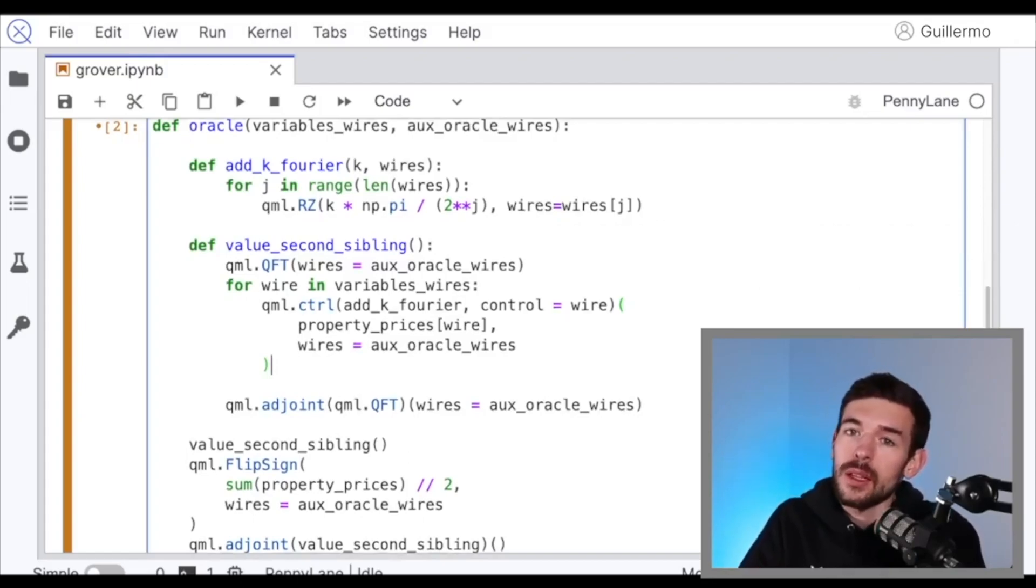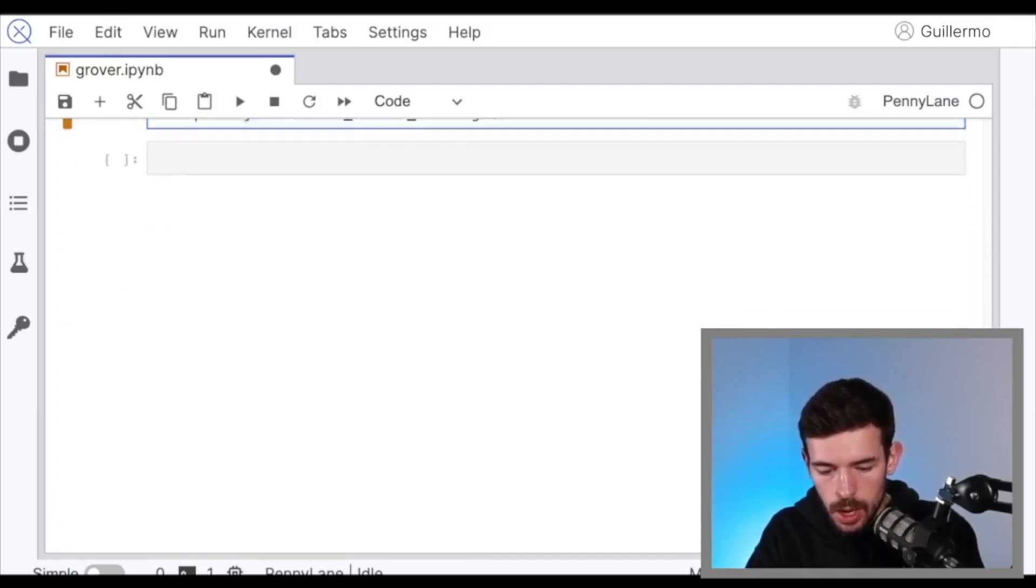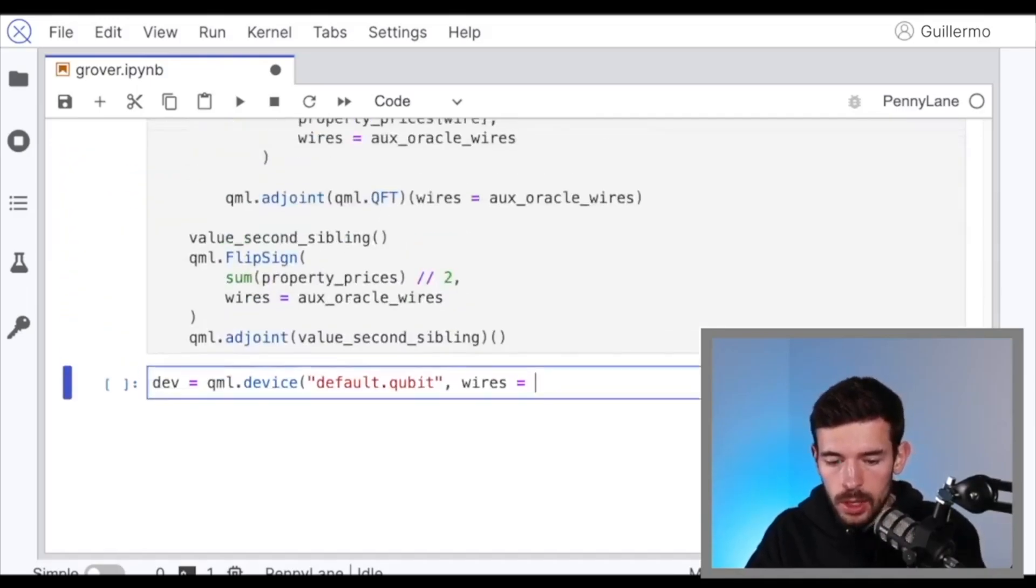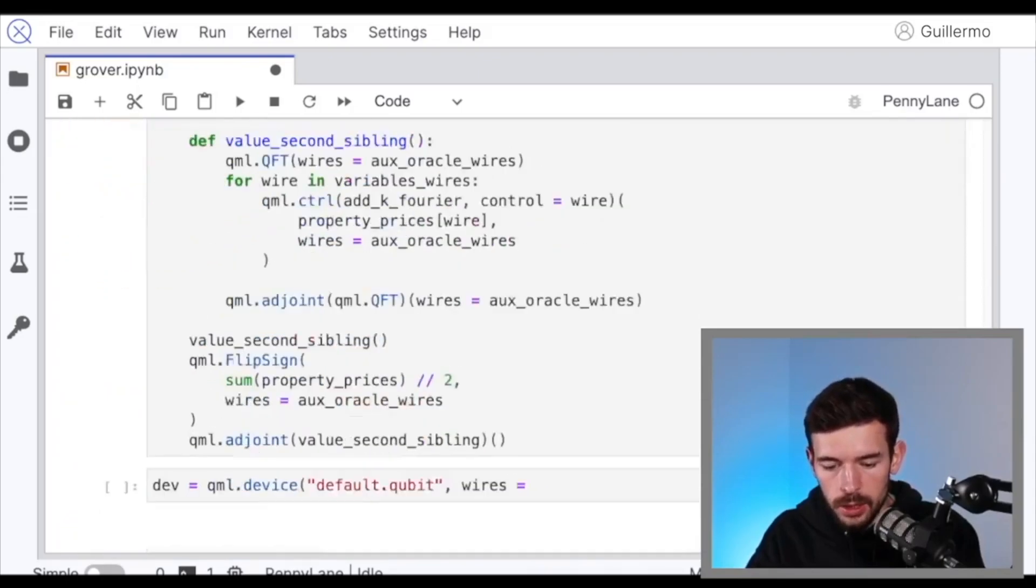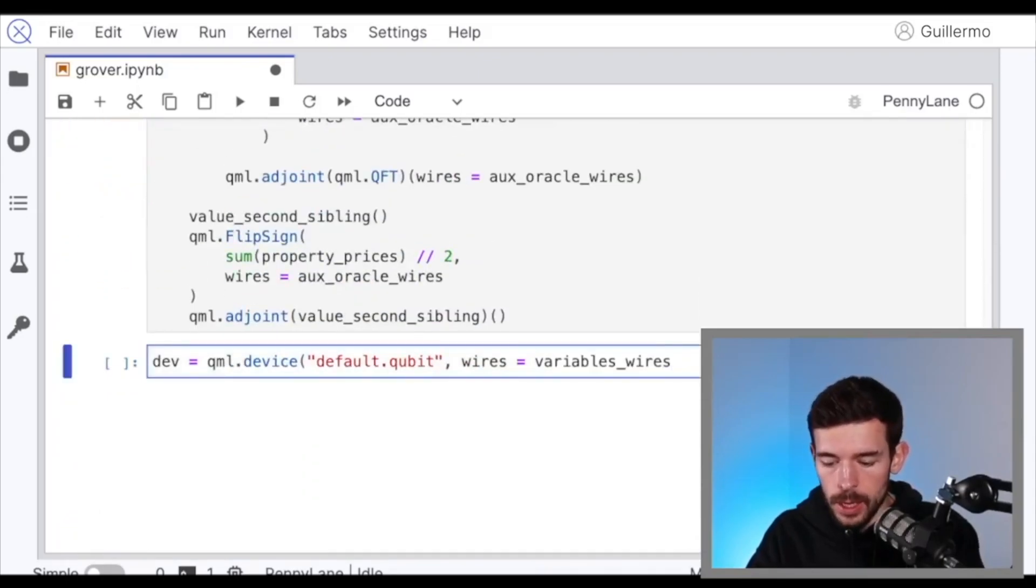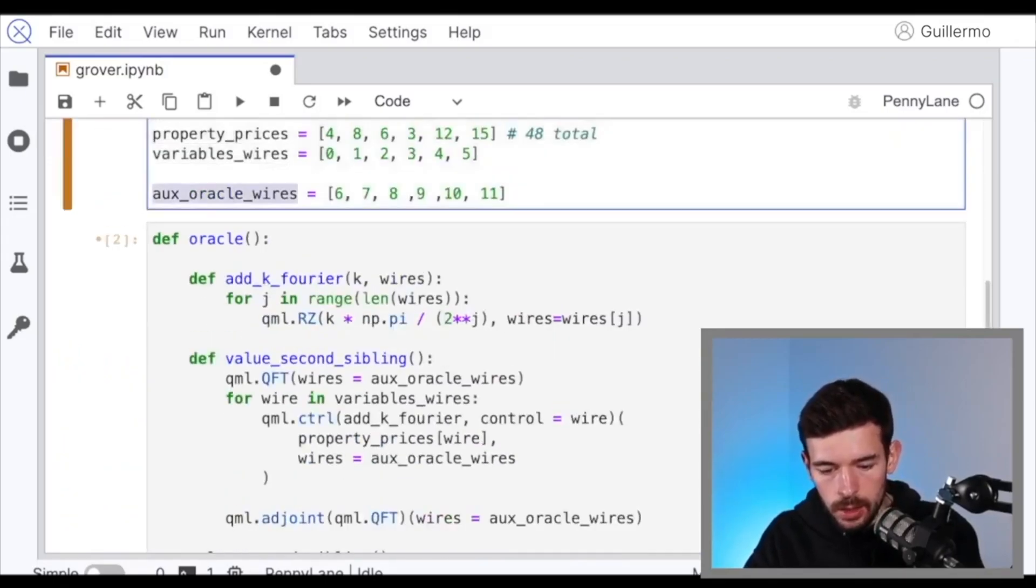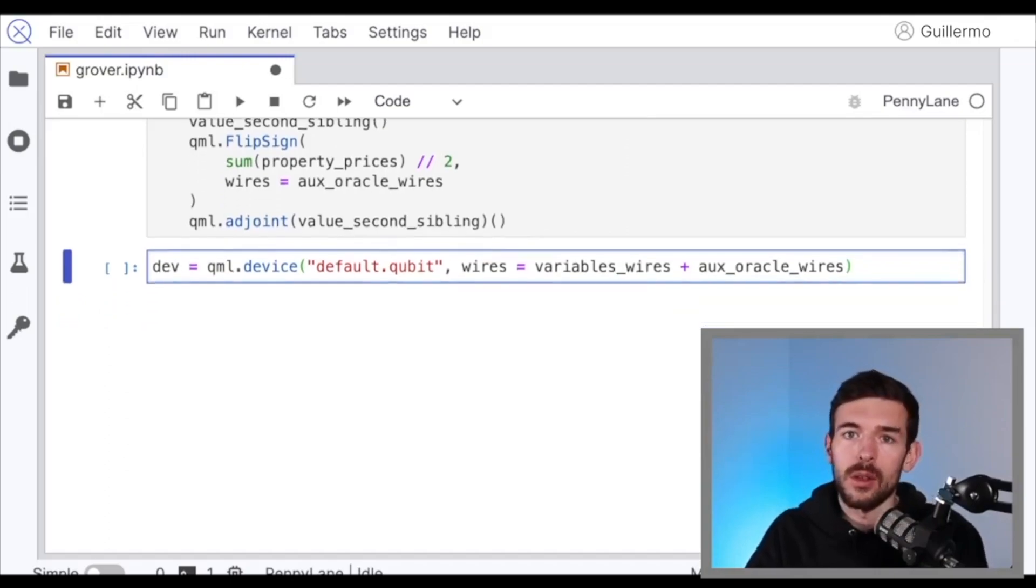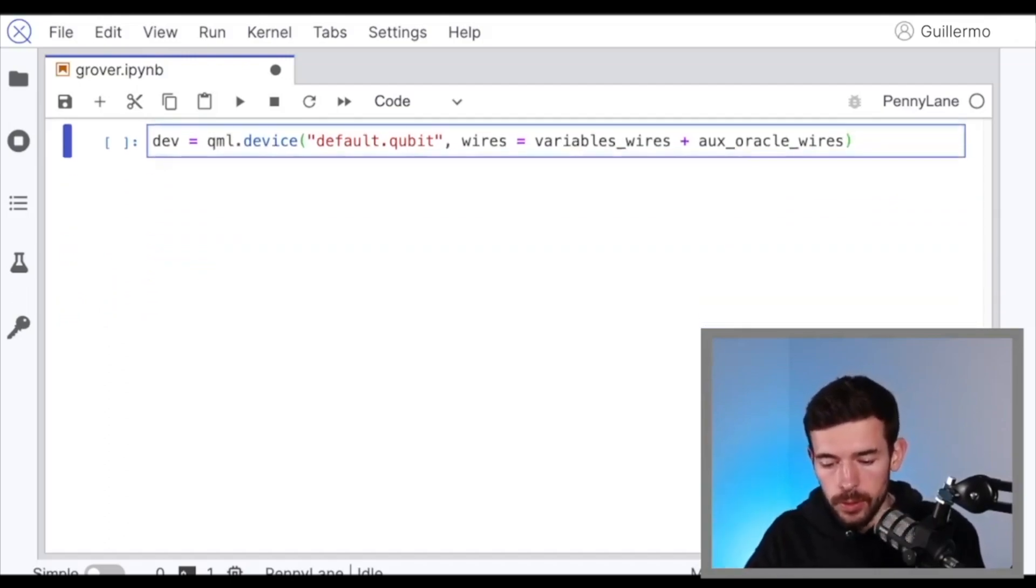And with all of that, now we can define our circuit. So to do that, let's create our device. Device equal qml.device, and let's use the default qubit. In that case, the wires that we are going to use are, on one hand, these variable wires, the ones that are codifying our variables, plus the auxiliary wires that we need to run the oracle, these wires that are going to save this counter of the amount of value of the properties of the second sibling.